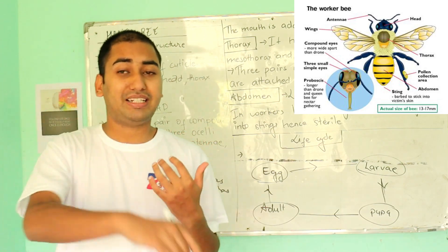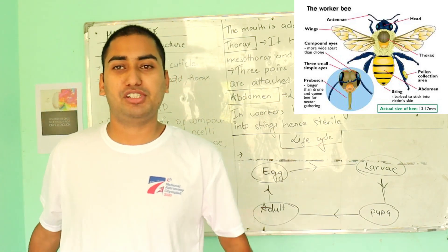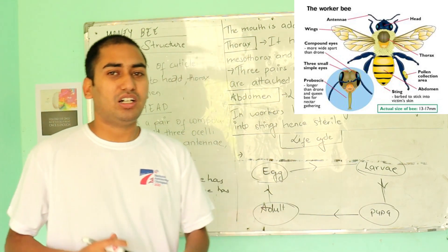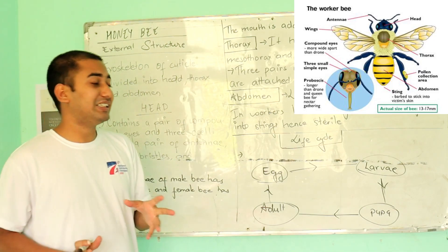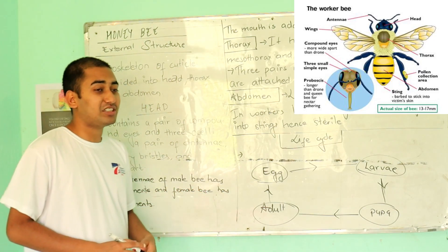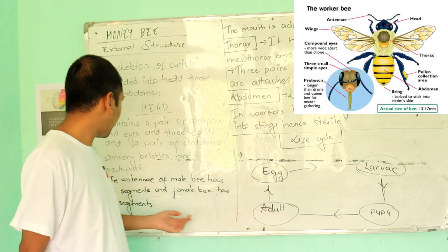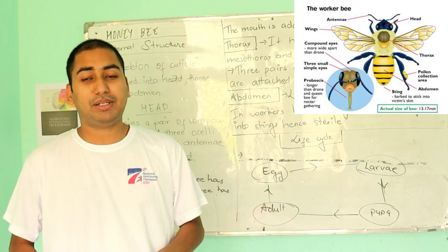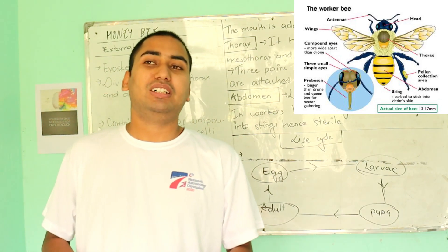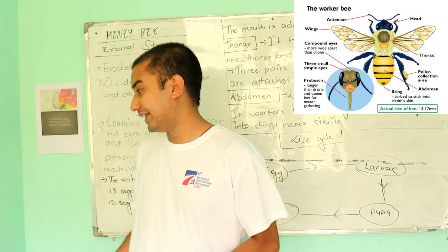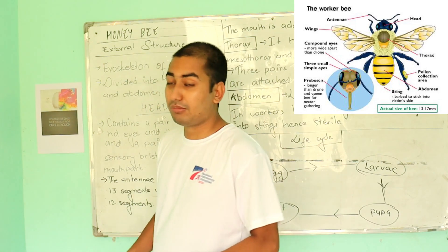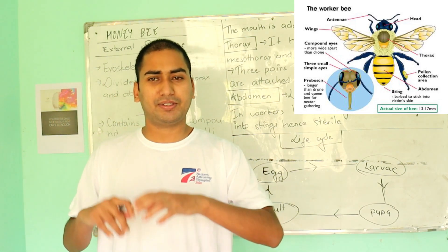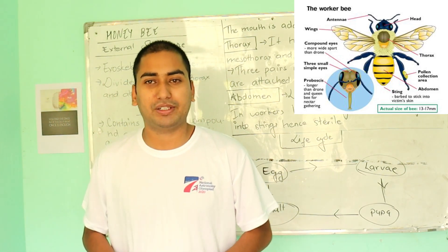There are also mouth parts. The mouth consists of a proboscis, a labrum, and a labium. The antennae have 13 segments in males and 12 segments in females. The sensory function is mostly energy-related. The mouth reacts in a different way — involving chewing and lapping.